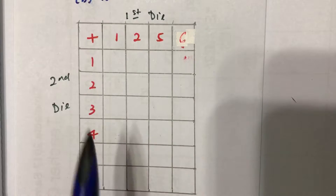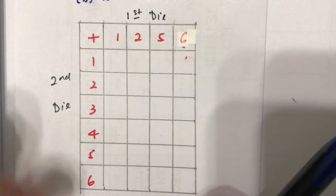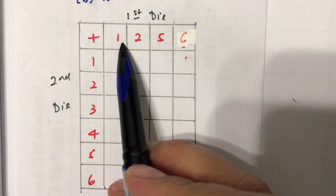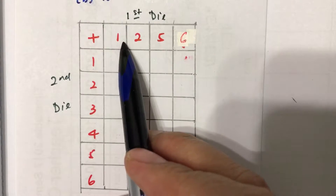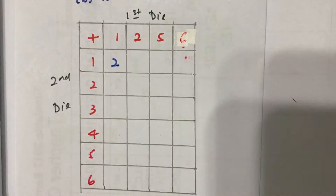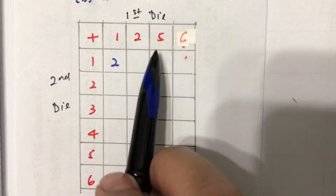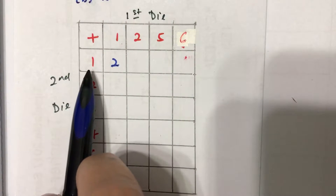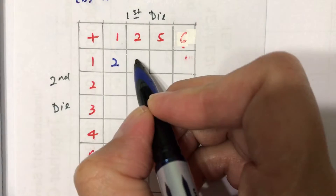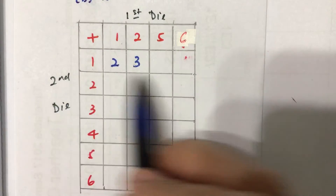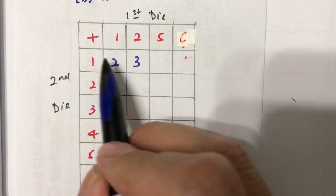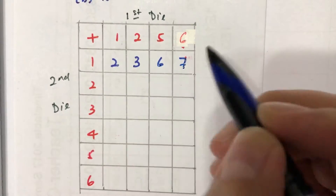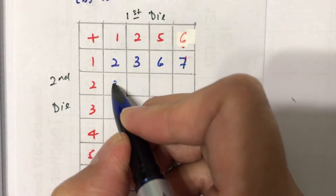When we roll the two dice, we can see that, for instance, if you roll and the first one shows a one and the second one also shows a one, the sum of the two will be two. But if the first die shows a two and the second one shows a one, the sum will be three. So basically, what you do is just normal adding up. One plus one is two, two plus one is three, five plus one is six, six plus one is seven, and you just do all the additions in the same manner.